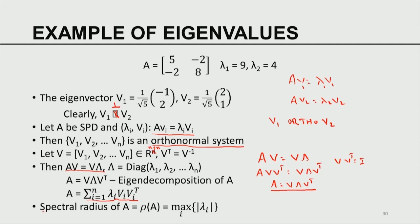Now we come to another important concept associated with this: the spectral radius, denoted by rho(A). The spectral radius equals the maximum of the absolute values of the eigenvalues. If A is symmetric, the lambdas are real; if A is symmetric and positive definite, the lambdas are real and positive. The spectral radius of a symmetric matrix is given by the maximum of the absolute values of its eigenvalues.